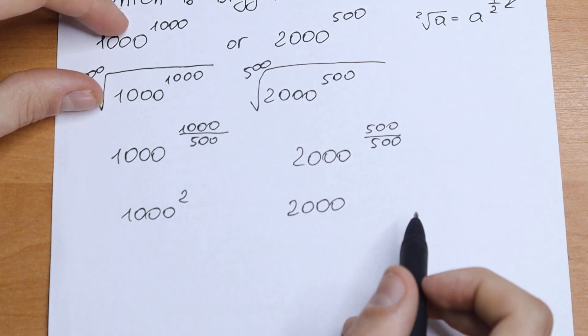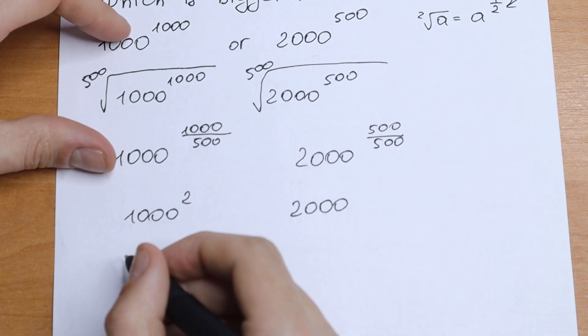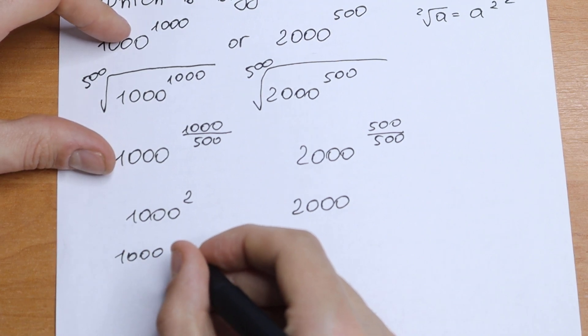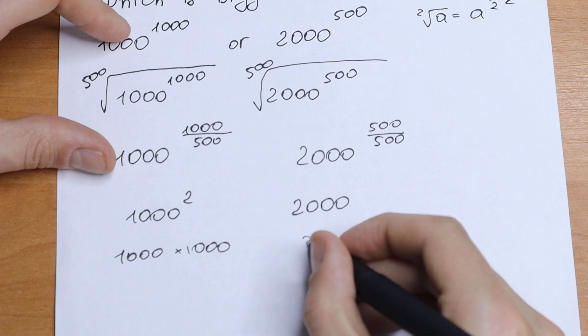How can we compare these two numbers? Take a look. This 1000 will be 1000 squared. It will be equal to 1000 times 1000, and right here 2000.